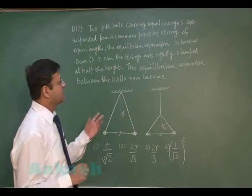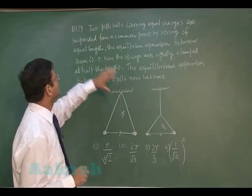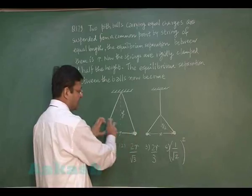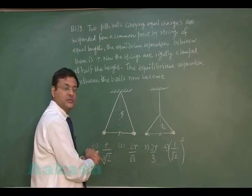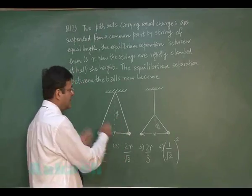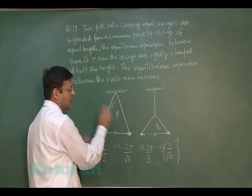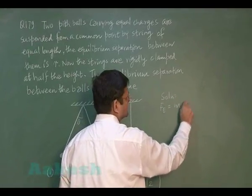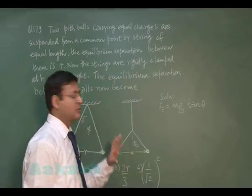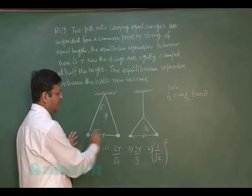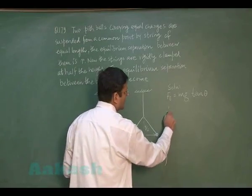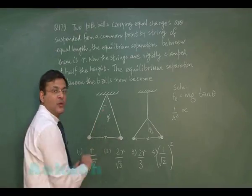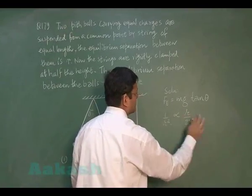Question 179 is based on electrostatics. Two pith balls carrying equal charges are suspended from a common point by strings of equal length, with equilibrium separation r. They repel each other via Coulomb's force. Using the standard equilibrium formula: electrostatic repulsion = mg·tan θ, and noting tan θ ≈ (r/2)/y in the first case, so the electrostatic force is proportional to 1/r².